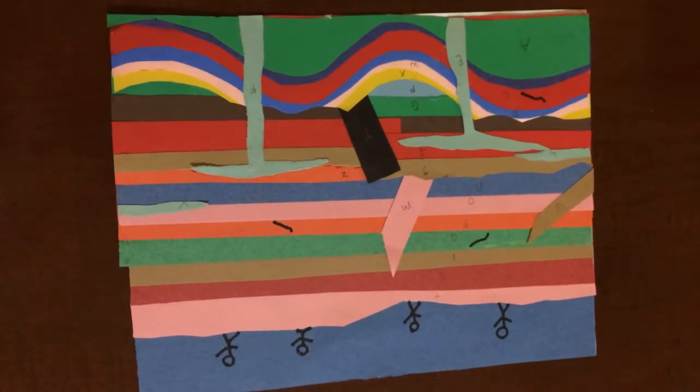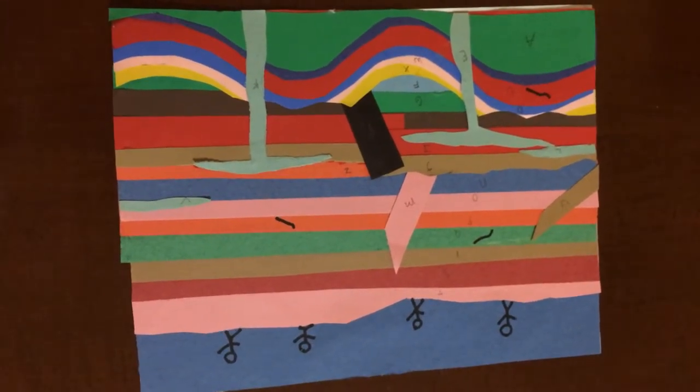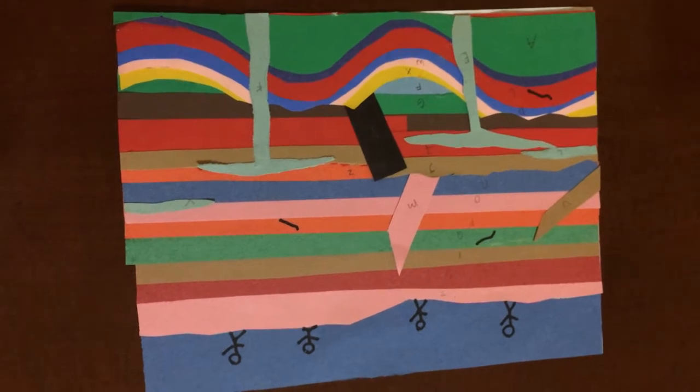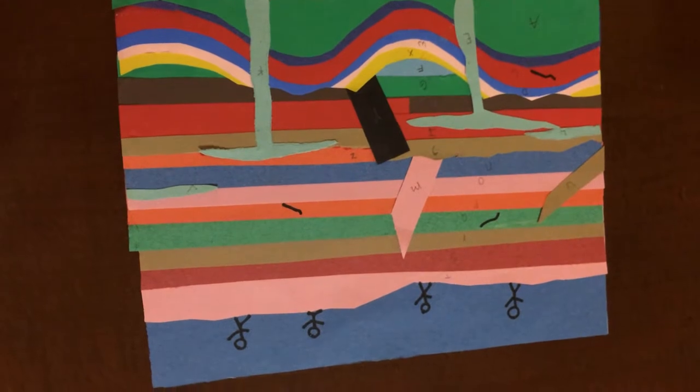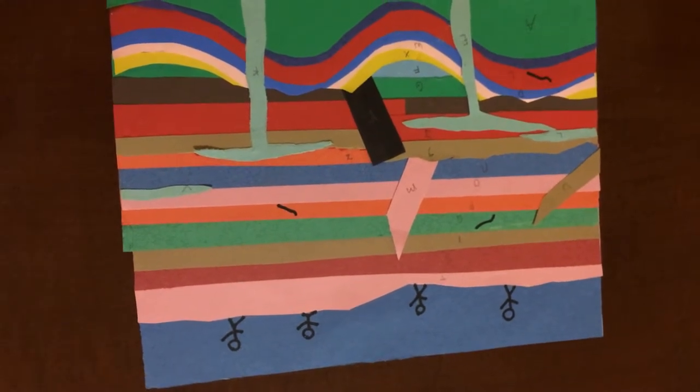Today we will be learning about rock layer formation. First we will be learning about folding. Folding on this poster are the curvy, wavy layers on the bottom. Folding is when there is a bend in the rock. It is mainly caused by forces pushing down a bit.